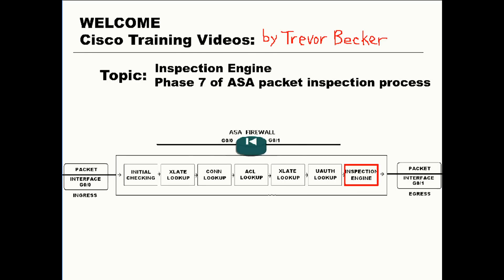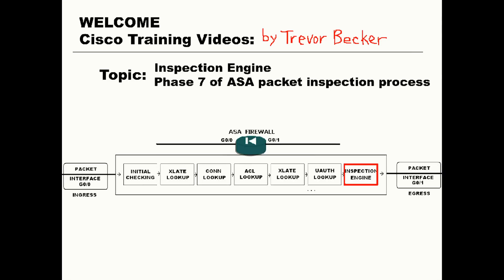Inspection engine is the seventh and last phase of the packet inspection process that occurs as packets traverse firewall interfaces. Depending on the protocol that is being used, the firewall is going to inspect each connection and apply specific rules to that traffic. If the traffic doesn't follow the expected protocol rules and it appears to be operating inappropriately, the firewall has the ability to drop certain packets. This inspection process has traditionally been called a fix-up, but recently it's more commonly referred to as Application Layer Protocol Inspection or Inspection Engines.